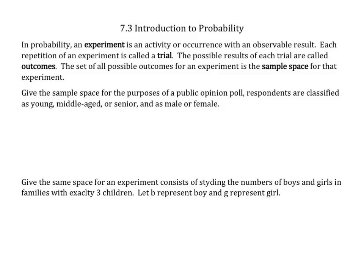In probability, an experiment is an activity or occurrence with an observable result. Each repetition of an experiment is called a trial. The possible results of each trial are called outcomes. The set of all possible outcomes for an experiment is the sample space for that experiment.